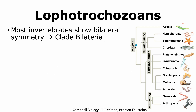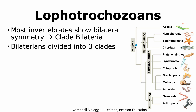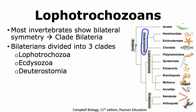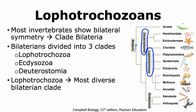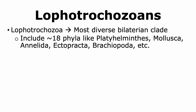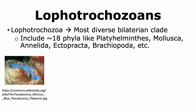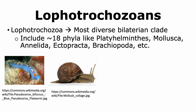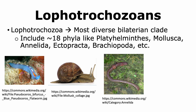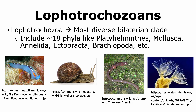Most of the animals present on Earth show bilateral symmetry, and hence they are all grouped into the clade Bilateria. Bilateria can be divided into three clades: Lophotrochozoa, Ecdysozoa, and Deuterostomia. The clade Lophotrochozoa is considered the most diverse bilaterian clade. It includes more than 18 phyla, like Platyhelminthes (flatworms), Mollusca (including snails), Annelida (including earthworms), and Ectoprocta and Brachiopoda, which have structures called lophophores.